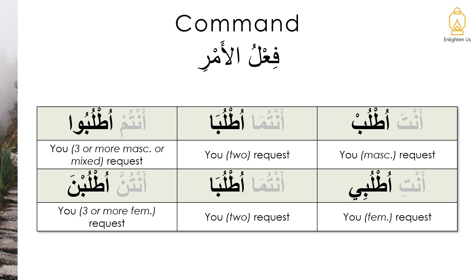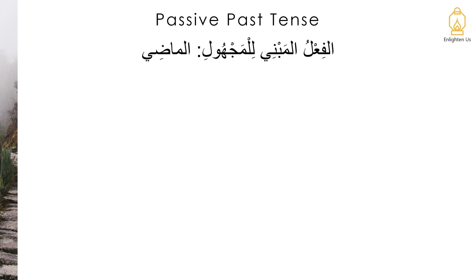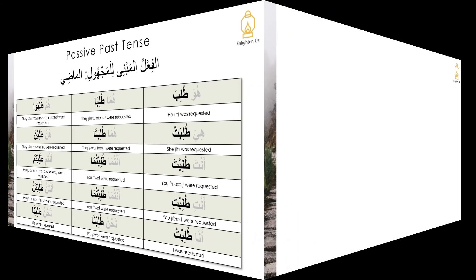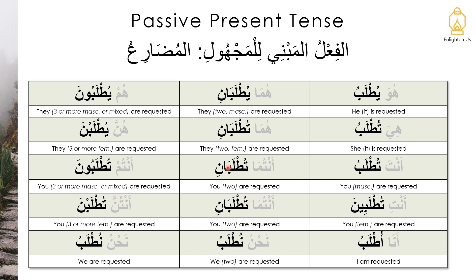Now let's move on to the passives. Let's start with al-fi'l al-mabni al-majhool al-maadi, the past tense. Now let's move on to the present tense, still sticking with al-fi'l al-mabni al-majhool, looking at the mudari' in the present tense.